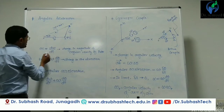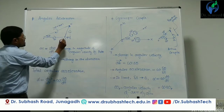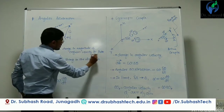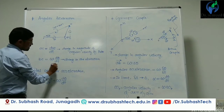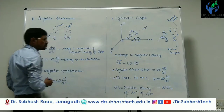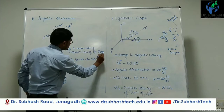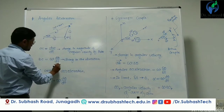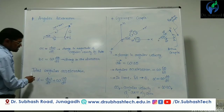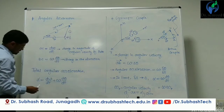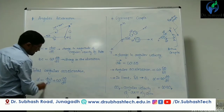So we have derived two equations. Equation 1: Se equals d omega by dt — this is the change in magnitude of angular velocity of the rotor. Equation 2: Bc equals omega times d theta by dt — this is the change in direction of angular velocity of the rotor. Therefore the total angular acceleration alpha equals Se plus Bc, which gives: alpha = d omega/dt + omega × d theta/dt.